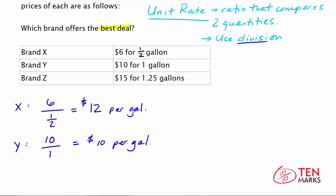And lastly, we can do Z. You get 15 divided by 1.25. And when you do this division, you get $12 per gallon.